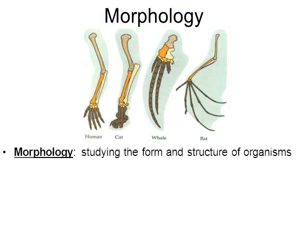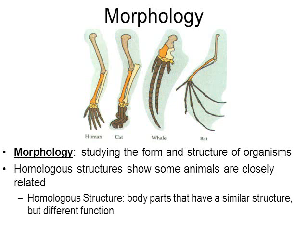When we look at morphology — examining the form and structure of organisms — one thing we can examine is homologous structures. This diagram is something we saw during the evolution chapter. Homologous structures are body parts that have a similar structure yet a different function. Looking at the four limbs of the human, the cat, the whale, and the bat — a bat's forelimb is for flight, a whale's for swimming, a cat's for walking, and the human arm is multipurpose for grasping — but they're built very similar to one another.